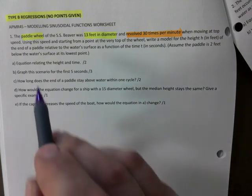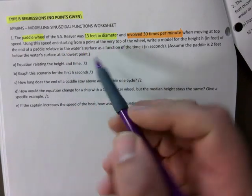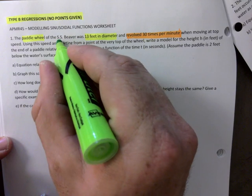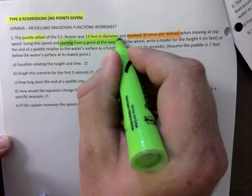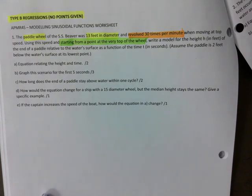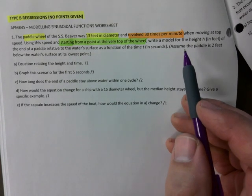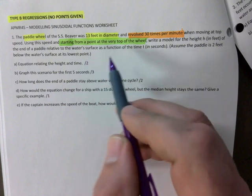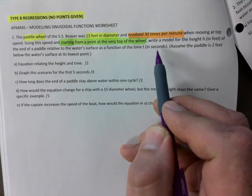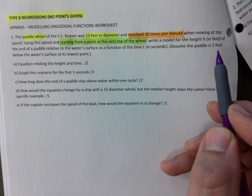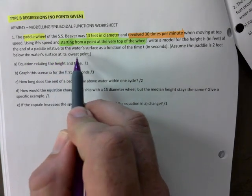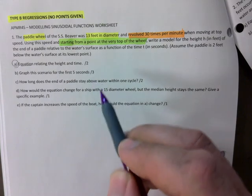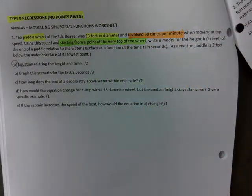The paddle wheel has a 13 feet diameter, that's worth highlighting. It revolves 30 times per minute when moving at top speed. Using this speed and starting from a point at the very top of the wheel, write a model for the height in feet of the end of the paddle relative to the water's surface as a function of time in seconds. Assume the paddle is 2 feet below the water at its lowest point.